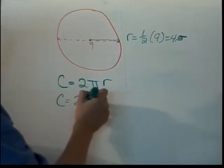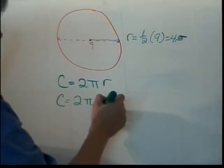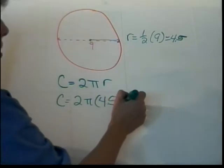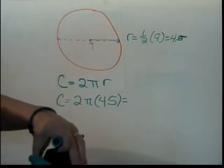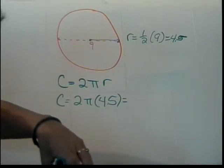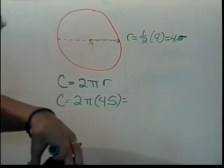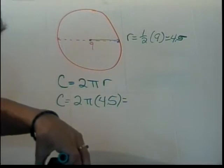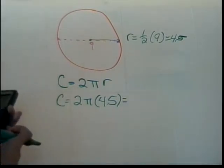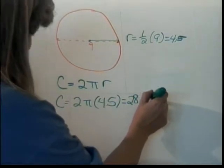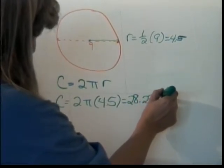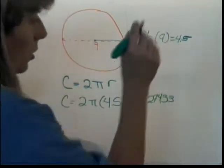The circumference is 2 times pi times 4.5, which is approximately 9 times pi, which is 28.27433, that's good enough.